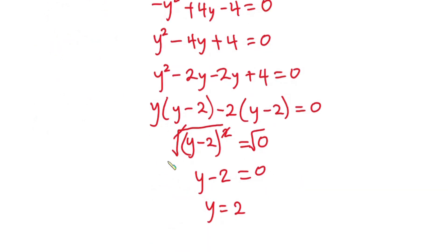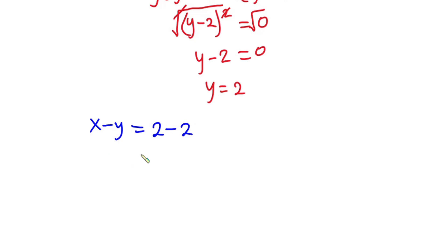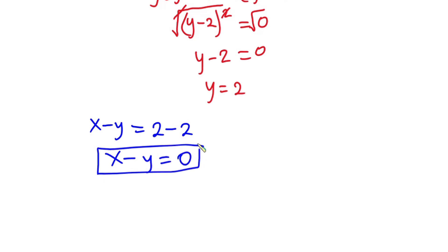So now that we know the values of x and y, we can find x minus y. We know x is 2 and y is also 2, so x minus y is equal to 0. And that is it!